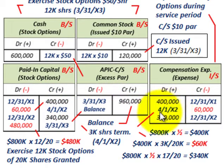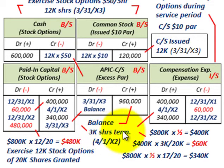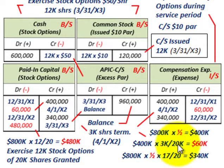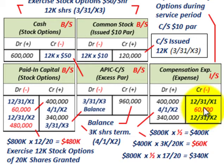On 4/1/X2, 3,000 of the shares are terminated because the executive resigned from the company. We have to remove them from our compensation expense. On 4/1/X2, we credit our compensation expense for $60,000. That's based on the fact that 3,000 of the 20,000 stock options granted are retired — that fractional amount, 3/20ths times $400,000, equals $60,000. So we credit or reduce compensation expense by $60,000 for the terminated shares, and debit or reduce our paid-in capital stock options account by $60,000.